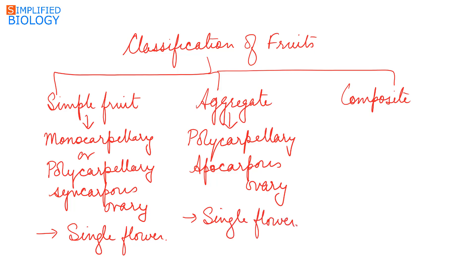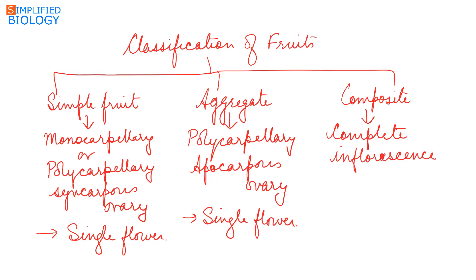In the case of a composite fruit, the complete inflorescence develops into the fruit, which means many flowers take part in the formation of the fruit.